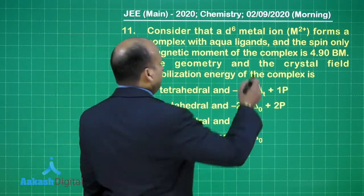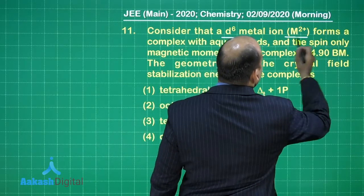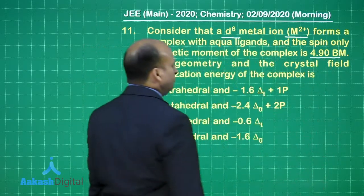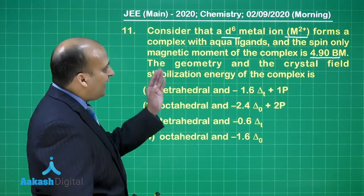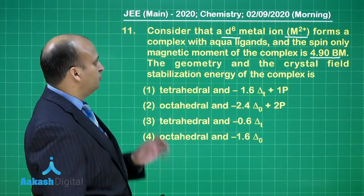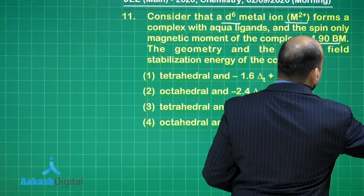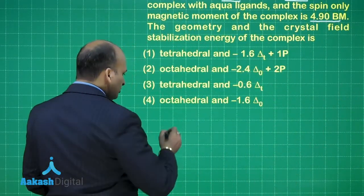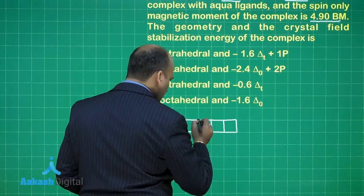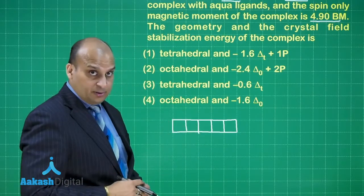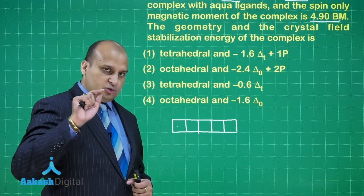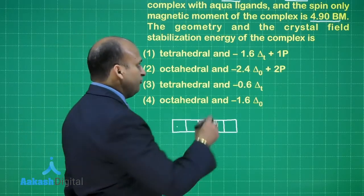Consider that a D6 metal ion M2+ forms a complex with aqua ligands and the spin only magnetic moment of the complex is 4.90 Bohr magneton. The geometry and the crystal field stabilization energy of the complex is being asked. Now, how to proceed over here? First of all, when you are given a D6 complex, D6 basically means that you are having 6 electrons over here.